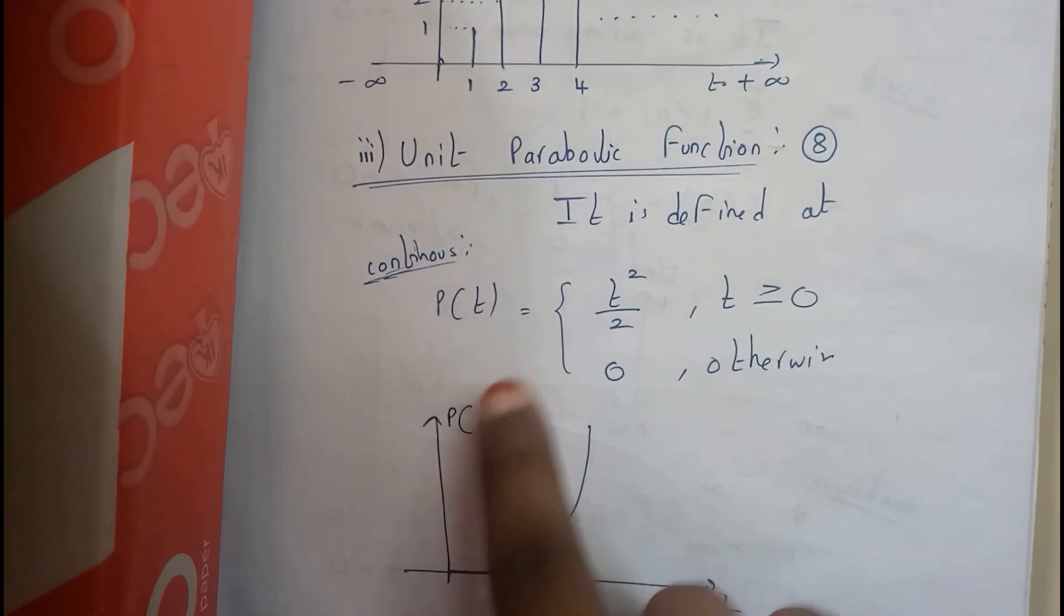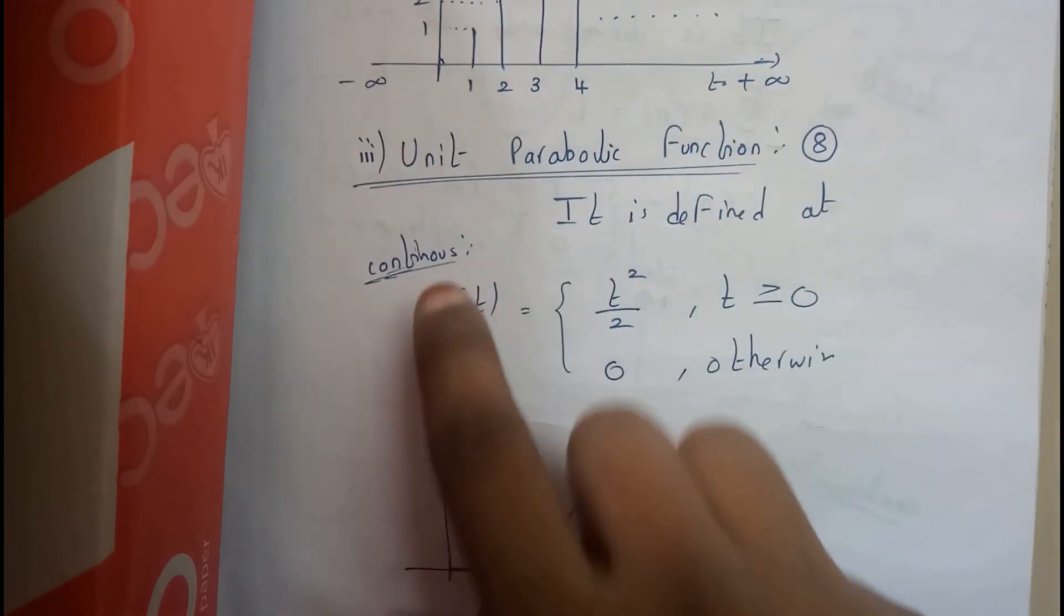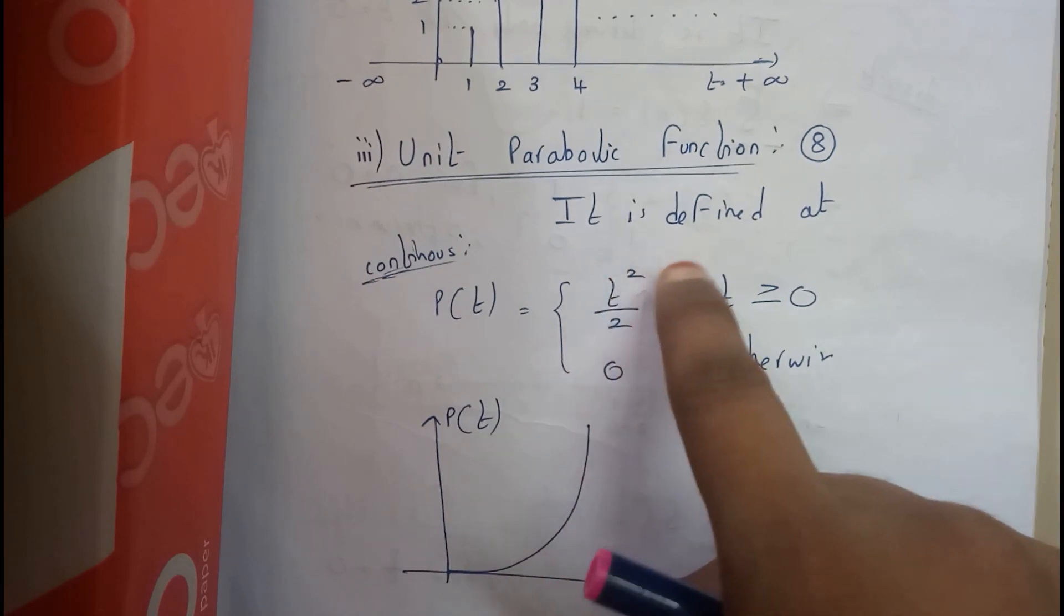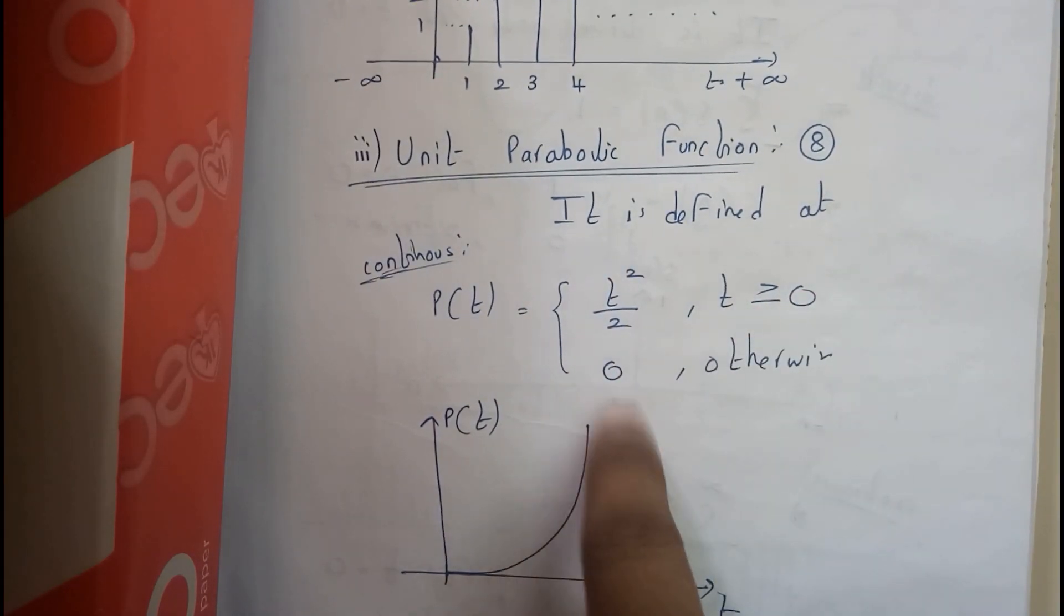It is defined in continuous as p of t. Parabola is of p. For continuous, t is equal to t square by 2, t should be greater than or equal to 0, 0 otherwise.